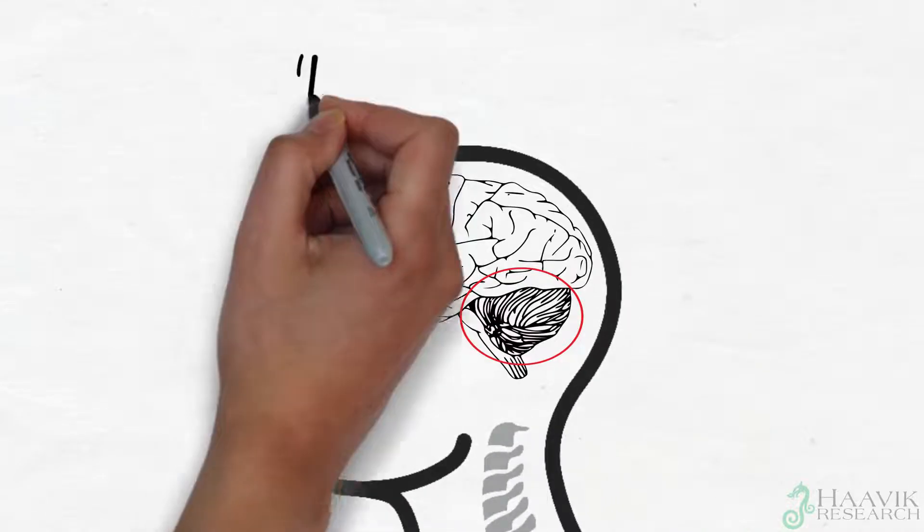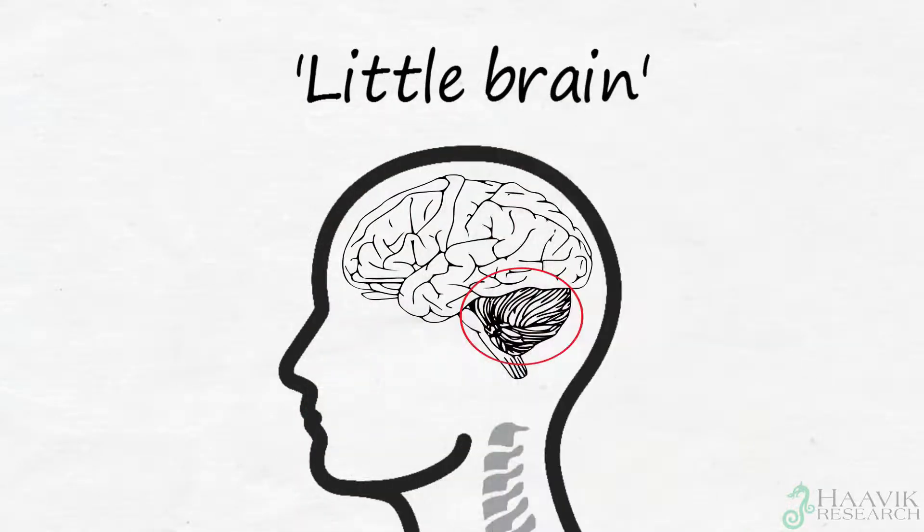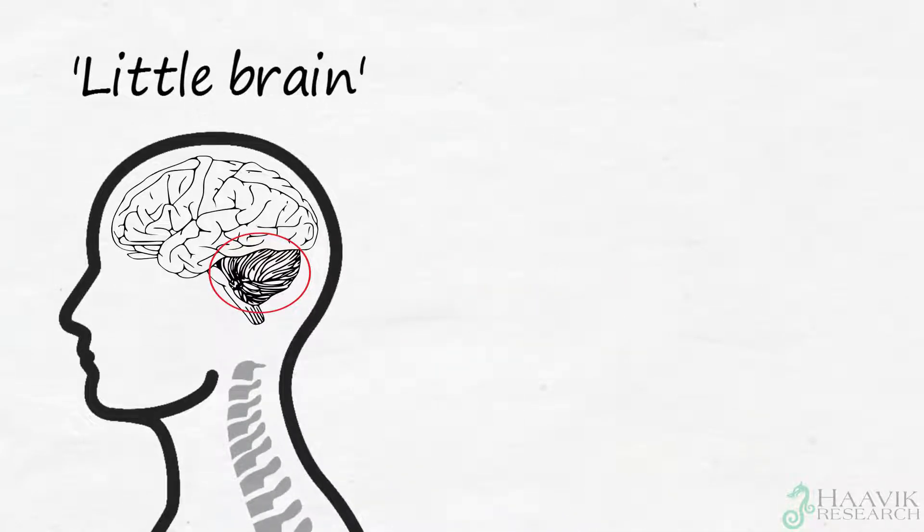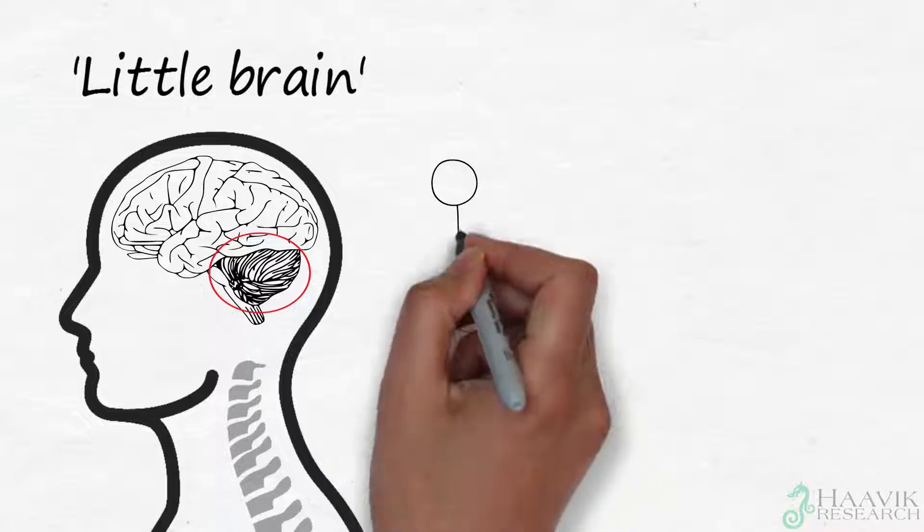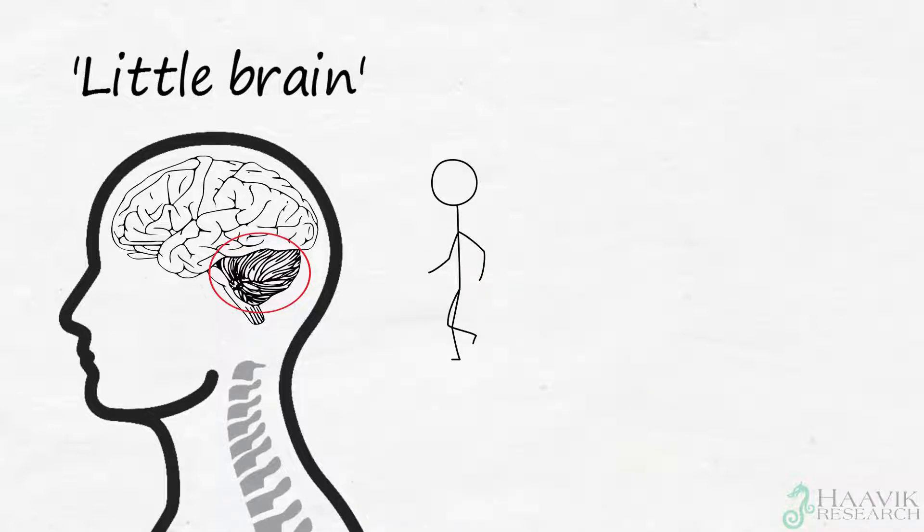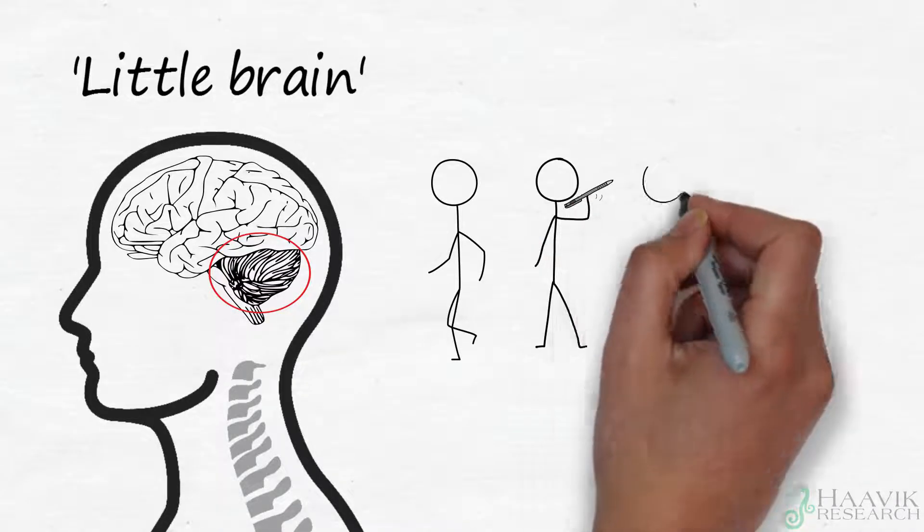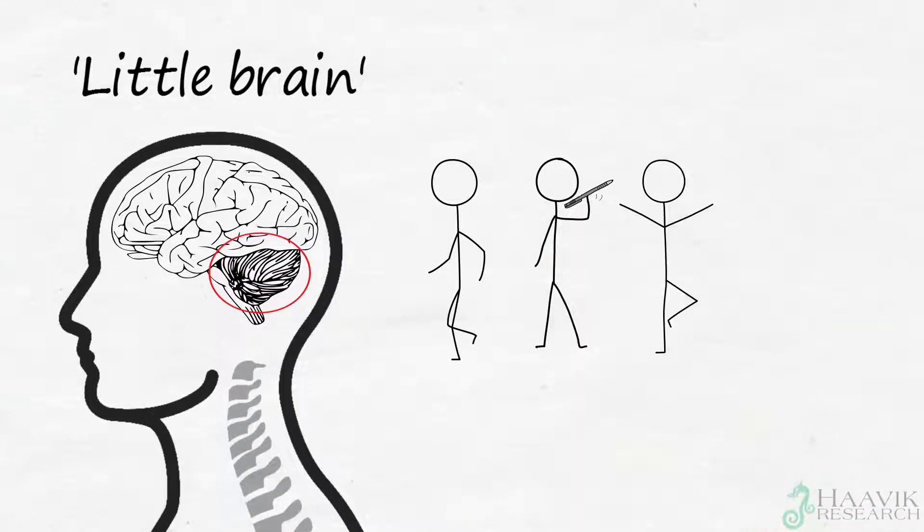This little structure at the back of your brain is incredibly important. For example, the cerebellum is extremely important for us to be able to perform everyday movements and tasks such as walking and reading and writing. It is also essential to be able to stay balanced and upright.